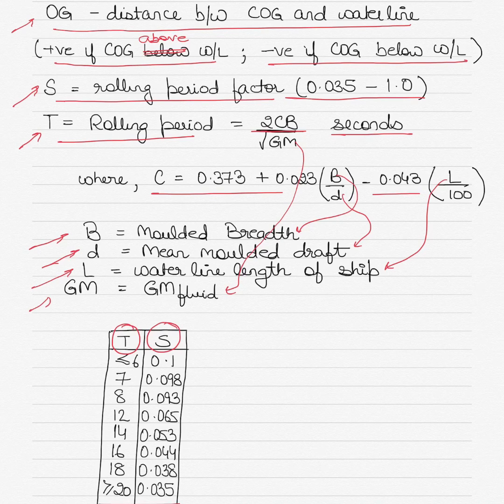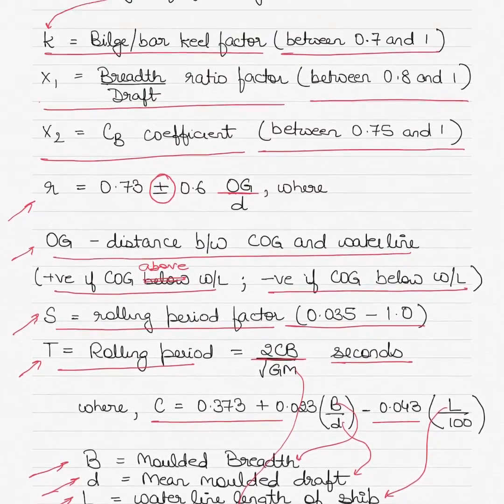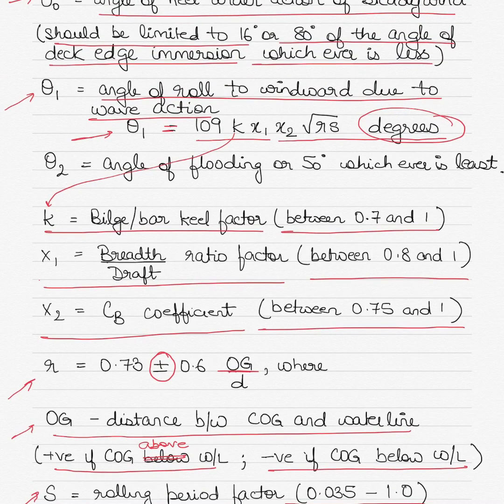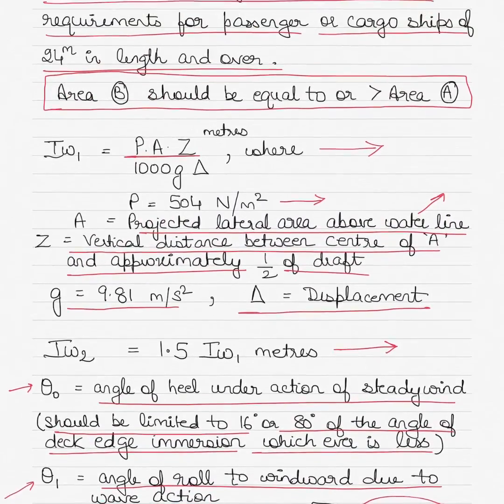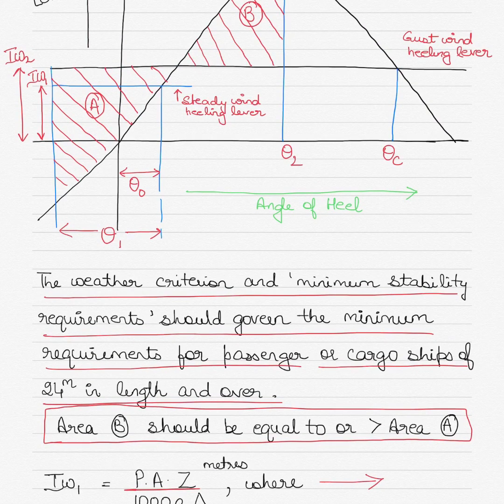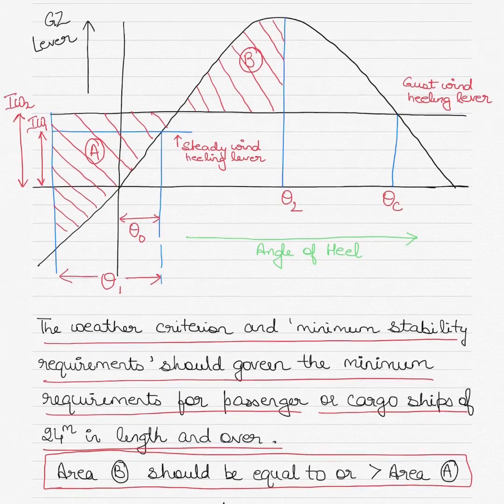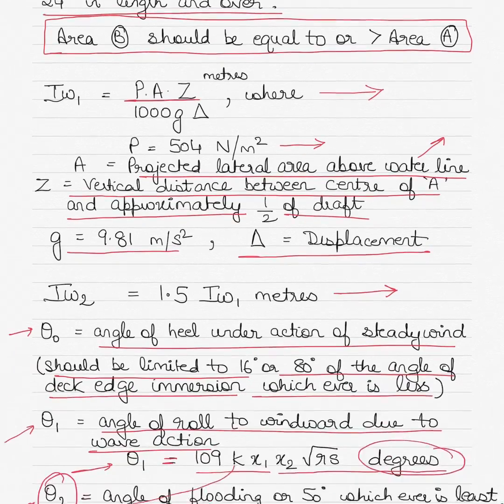You can calculate at what rate the vessel is rolling. The angle theta 2 stands for angle of flooding or 50 degrees, whichever is least. It is the angle at which the deck edge immerses completely in the water and flooding starts to take place. Each of these values are provided with their meanings. If you have any questions regarding any of these values, make sure that you write in the comment section or contact me.